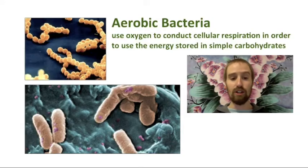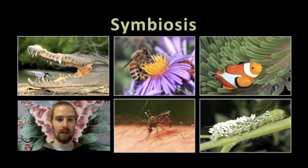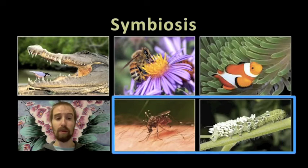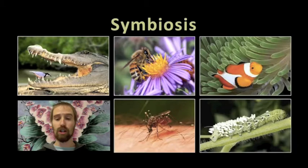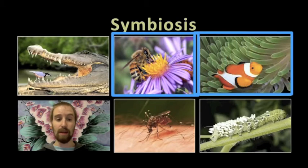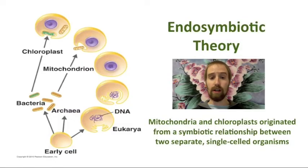But bacteria were the first to do it, and in fact they may be the reason that any of us can conduct cellular respiration at all. The word symbiosis describes the long-lasting relationships that form between organisms of different species, and symbiotic relationships are really, really important on our planet. Sometimes these relationships are lopsided, as is the case with parasites and their hosts. But sometimes these relationships are mutually beneficial, as is the case of the symbiotic relationship between bees and the flowers that they pollinate, or between clownfish and the anemones that provide them with protection.